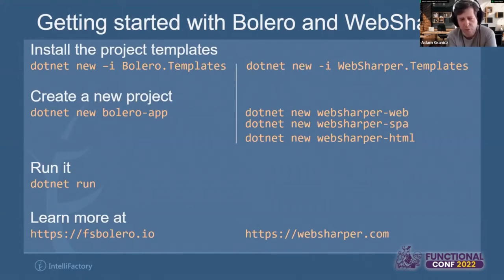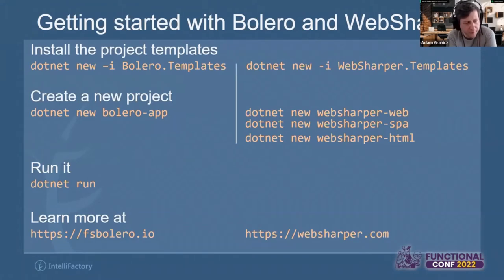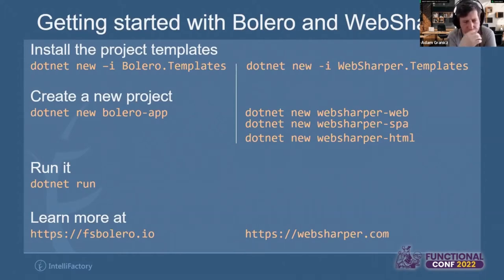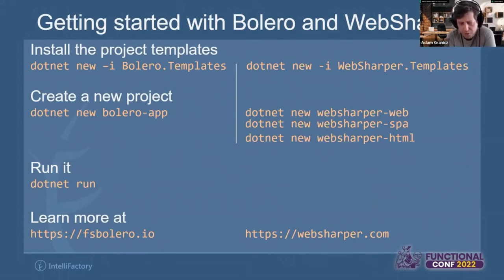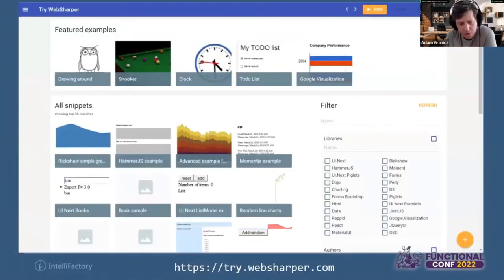There are other templates I won't cover today — there's a nice documentation page that describes them. We are about to release WebSharper 6, probably early next week, and there will be a new documentation site with a lot of extra information. Once you've created a project you can run it using 'dotnet run', or use 'dotnet build' to check for compilation errors. The two websites to watch are fsbolero.io and websharper.com.